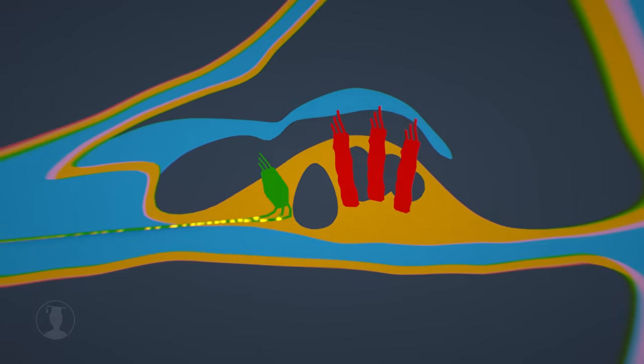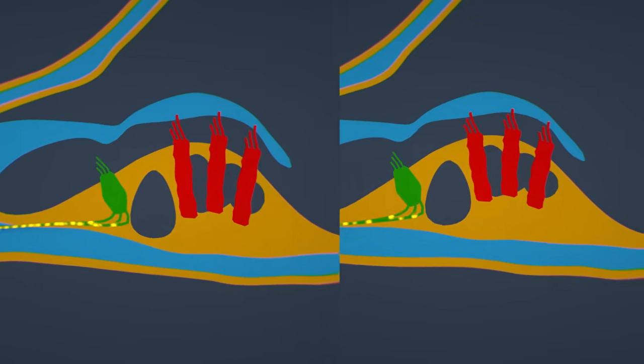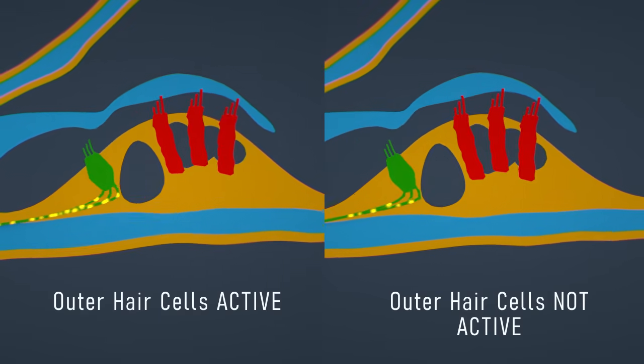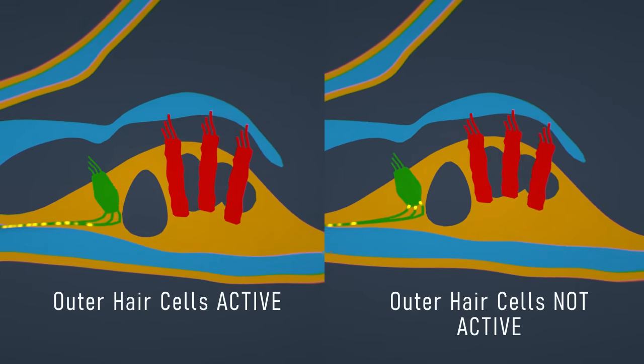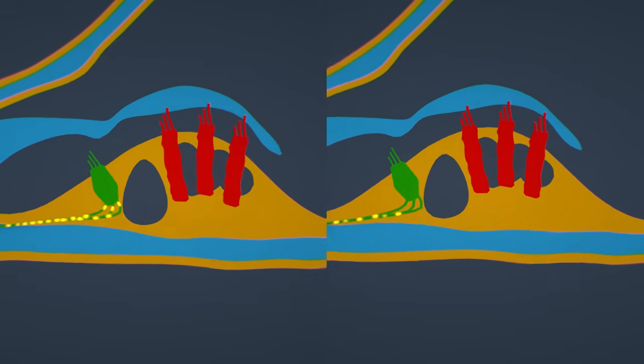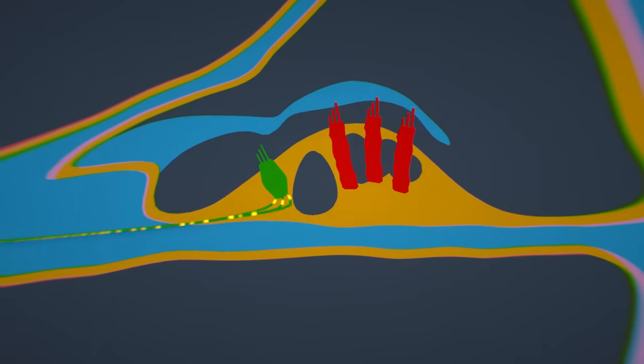If the outer hair cells do not shorten or lengthen in response to soft noises, we can speak of impaired hearing. If the inner hair cells do not function correctly, the result is deafness.